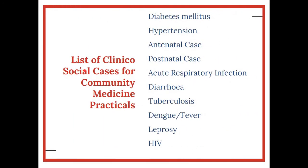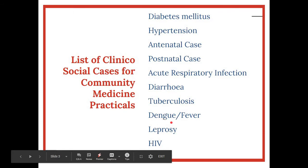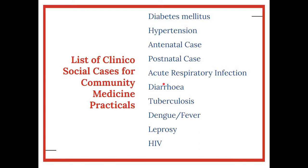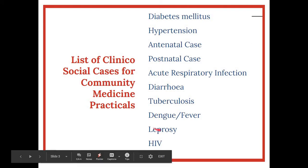Here is a list of clinical social cases kept in community medicine practicals — 10 cases, and 99% of the time you will get one among these. They can be divided into five pairs: the non-communicable pair (diabetes mellitus and hypertension), the MCH pair (antenatal and postnatal), the pediatric pair (ARI and diarrhea), the chronic illness pair (tuberculosis and leprosy), and the miscellaneous pair (dengue/fever or HIV). Almost half the time you will get diabetes mellitus or hypertension, or a case where the patient also has these conditions.